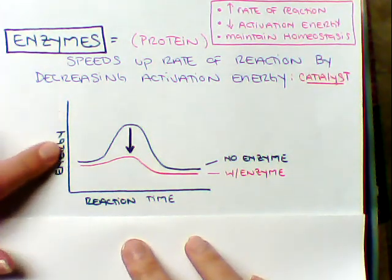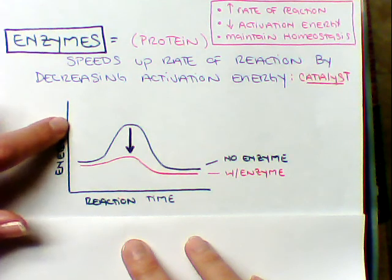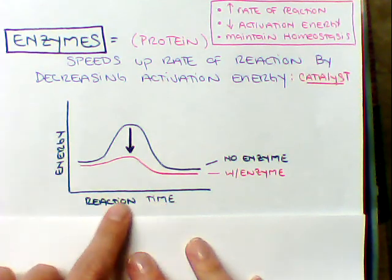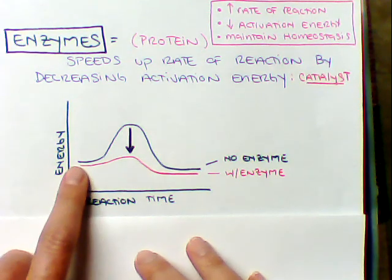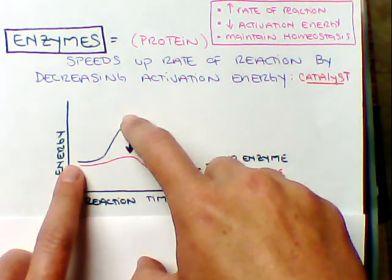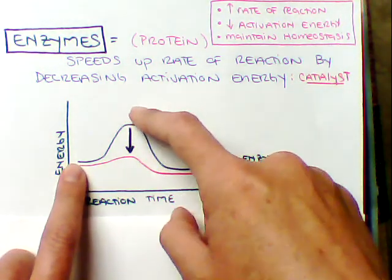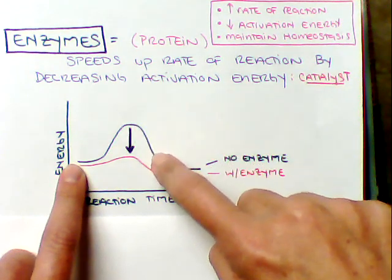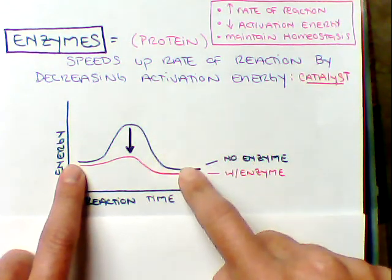So here is a graph that shows kind of like amount of energy that we need, super high, super low, and then our reaction time. So if I were to actually eat a cheeseburger, it would take a lot of energy, almost like 2,000 years worth of energy, to actually start to break down that cheeseburger without any enzymes.